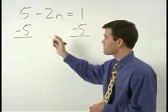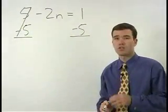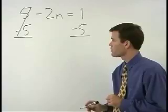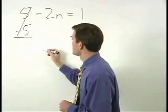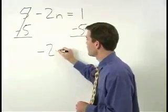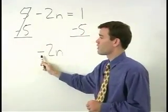On the left side, 5-5 cancels. And here's the tricky part. Make sure you understand that what we're left with on the left side of the equation is a negative 2n. Students often forget to bring down this negative.